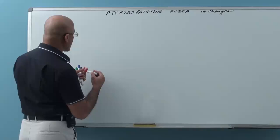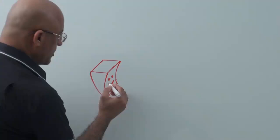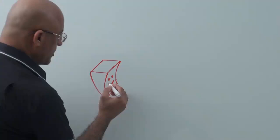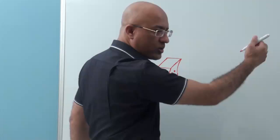The pterygopalatine fossa is a sort of pyramidal space. This is its anterior face, this is the top of the fossa, this is the back of the fossa, and it's a paired structure. There is one pterygopalatine fossa on the right side of the skull and one on the left side. Here I am drawing the right side of the skull.